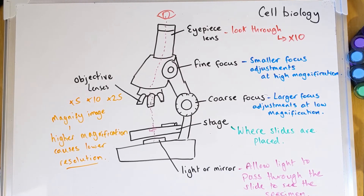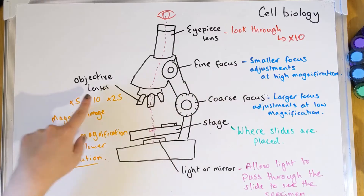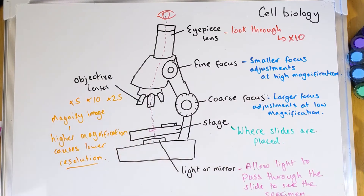In an exam you wouldn't necessarily have to label the microscope, but you'd need to know, for example, that if an image was blurry you'd adjust using the fine or coarse focus, or that the objective lenses — which come in times 5, 10, or 25 — are what you change to increase magnification. Make sure you've got your notes done, then we'll look at light versus electron microscopes.